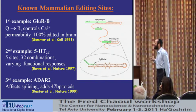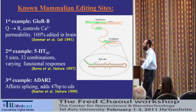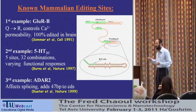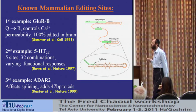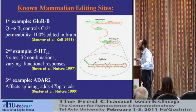A few years later, a second example came about: a serotonin receptor, another receptor encoding an ion channel expressed in the brain. Here there are five editing sites, and they occur in all combinations — 32 combinations of transcripts. Any combination of these five sites can be edited, so a single transcript can result in 32 variants, yielding about 20-something protein variants from the same transcript. This is again a nice example going beyond the central dogma.